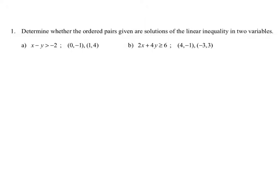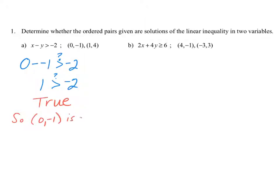We replace the x and y in the original inequality with x = 0 and y = -1. By plugging it in, we get 0 minus a negative 1, and we check: is that greater than negative 2? Simplifying 0 minus negative 1, we get positive 1. Since 1 is greater than negative 2, that is a true statement, so (0, -1) is a solution.